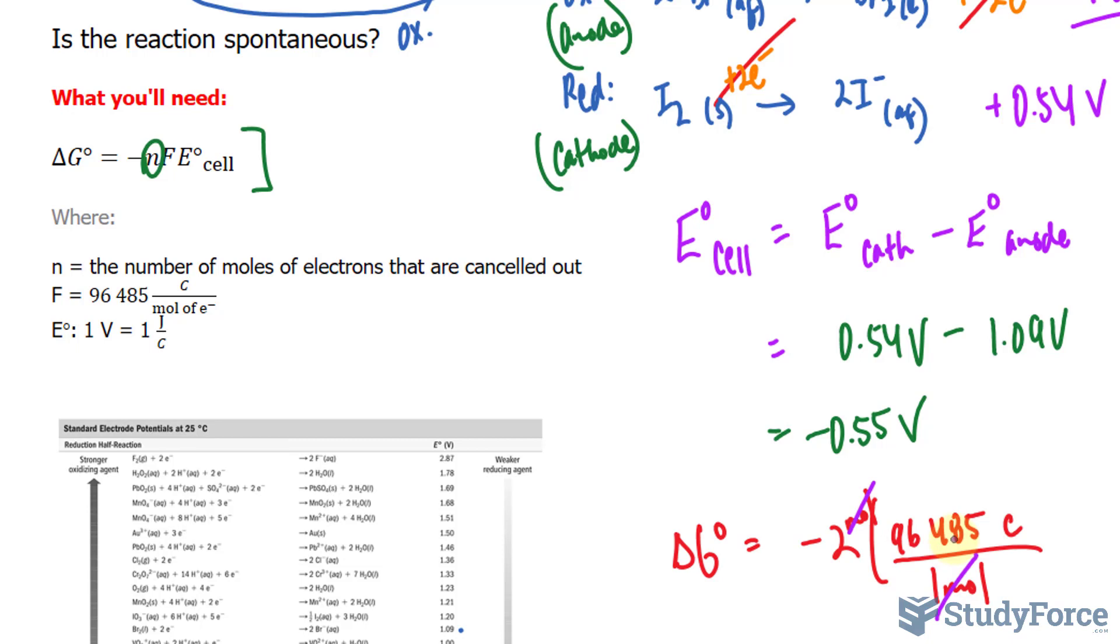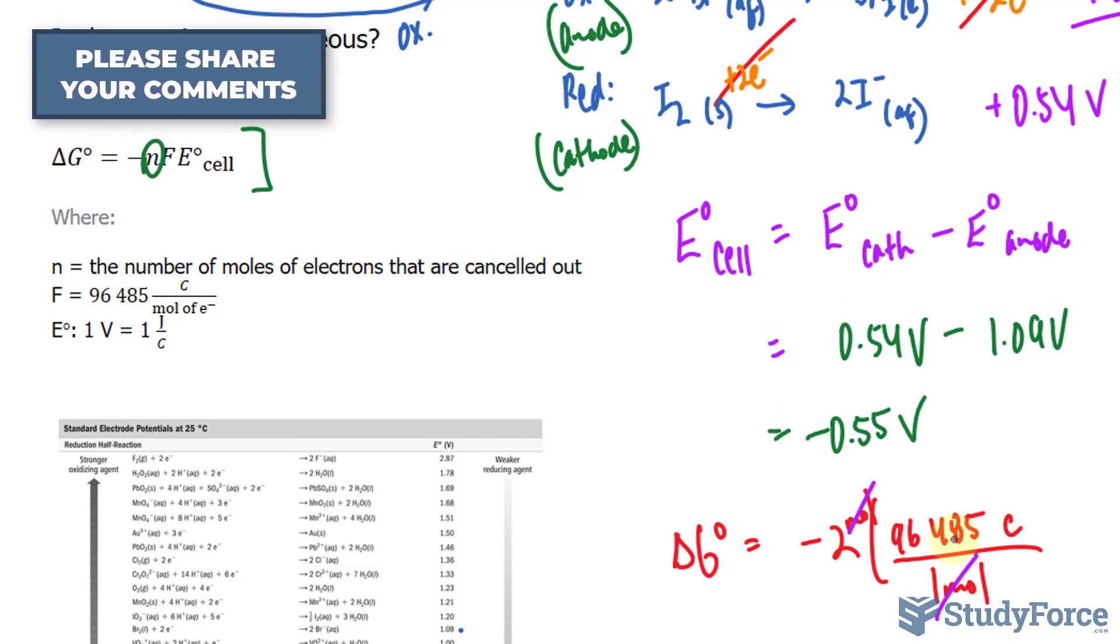In case you're also taking a physics class, the Faraday constant, the number that we're using here, is different than one Farad. Remember, a Farad is one coulomb per one volt. This is one coulomb per one mole. Anyway, let's continue.